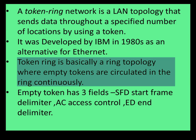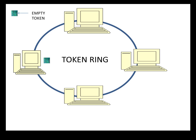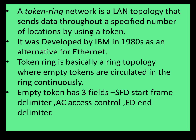Token Ring is basically a ring topology where empty tokens are circulated in the ring continuously. All the devices are connected to each other in a format of a ring, and empty tokens are passed continuously in that ring. These empty tokens have three fields: SFD, AC, and ED.